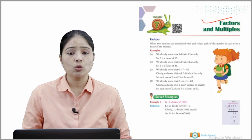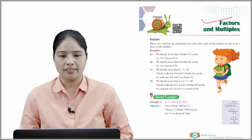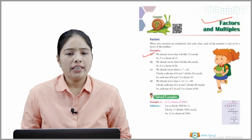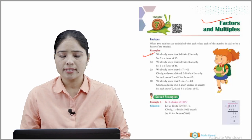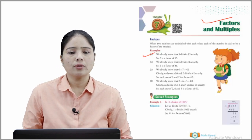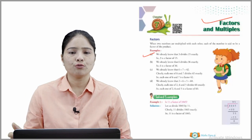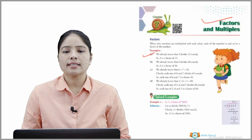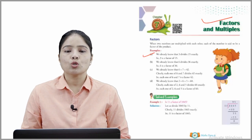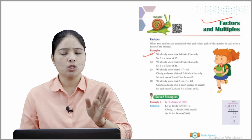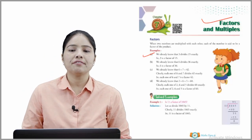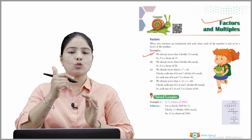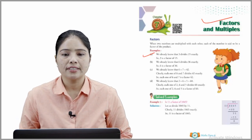We already know that 3 divides 15 exactly, so 3 is a factor of 15. Similarly, 6 divides 36 exactly, so 6 is a factor of 36. We also know that 6 into 7 is equal to 42, so each one of 6 and 7 divides 42 exactly — each is a factor of 42.